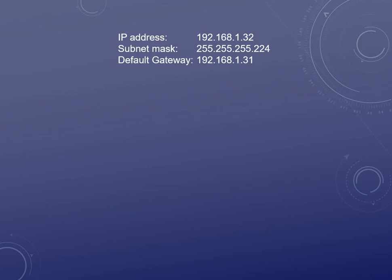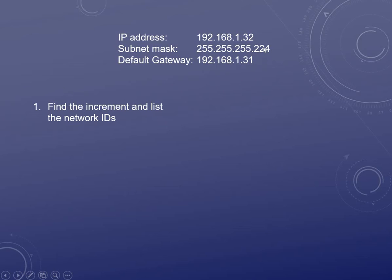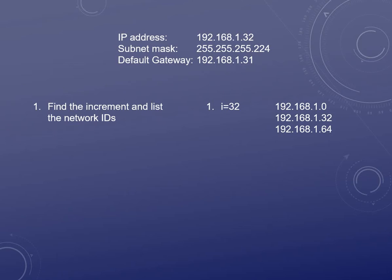Now let's look at another example: 192.168.1.32 and 192.168.1.31 with a subnet mask of 255.255.255.224. Again, let's find the increment — where is the last bit in 224? It's in the 32nd slot. Now we start listing out our increments: 192.168.1.0, then 192.168.1.32, and 192.168.1.64.